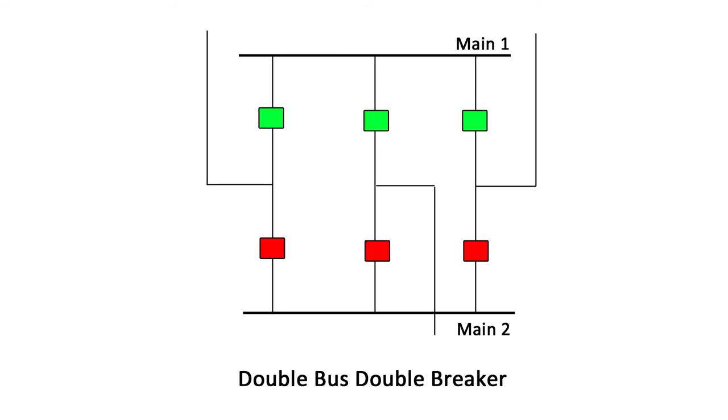Load balancing between buses can be achieved by shifting circuits from one bus to the other.